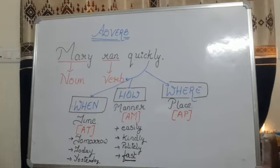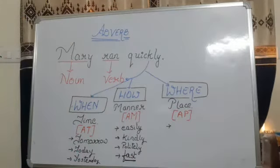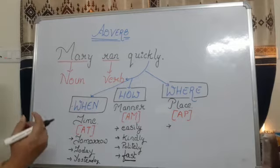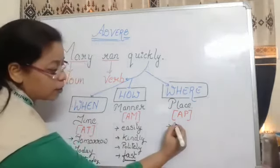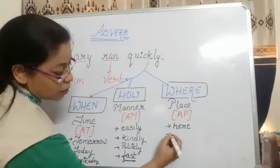And last but not the least is A-P. It shows that where the action has been performed. So it can be called A-P. Some of the examples of adverb of place is like here.